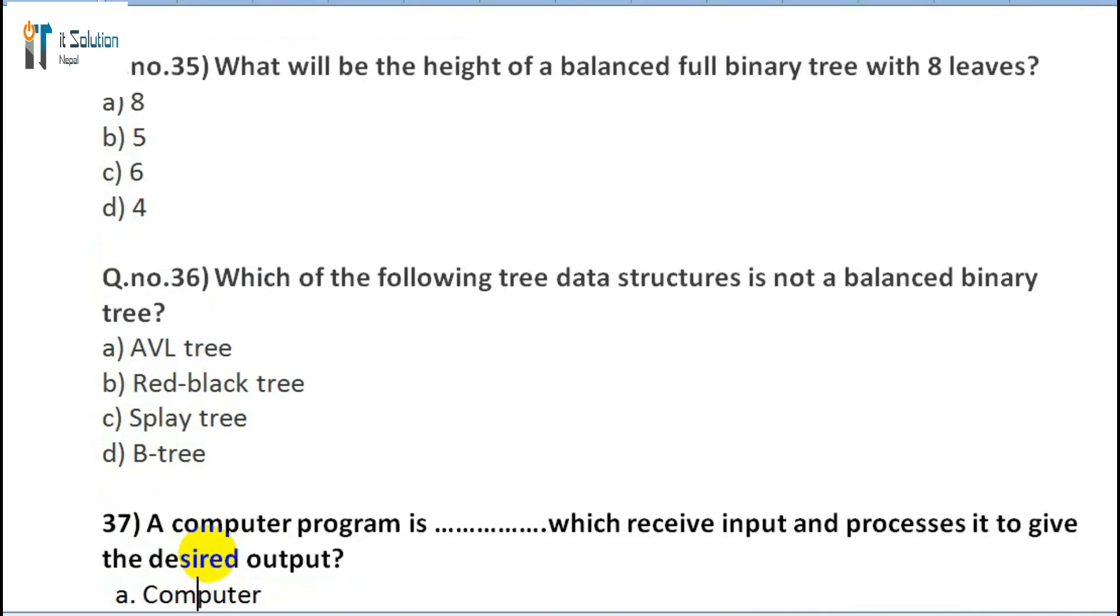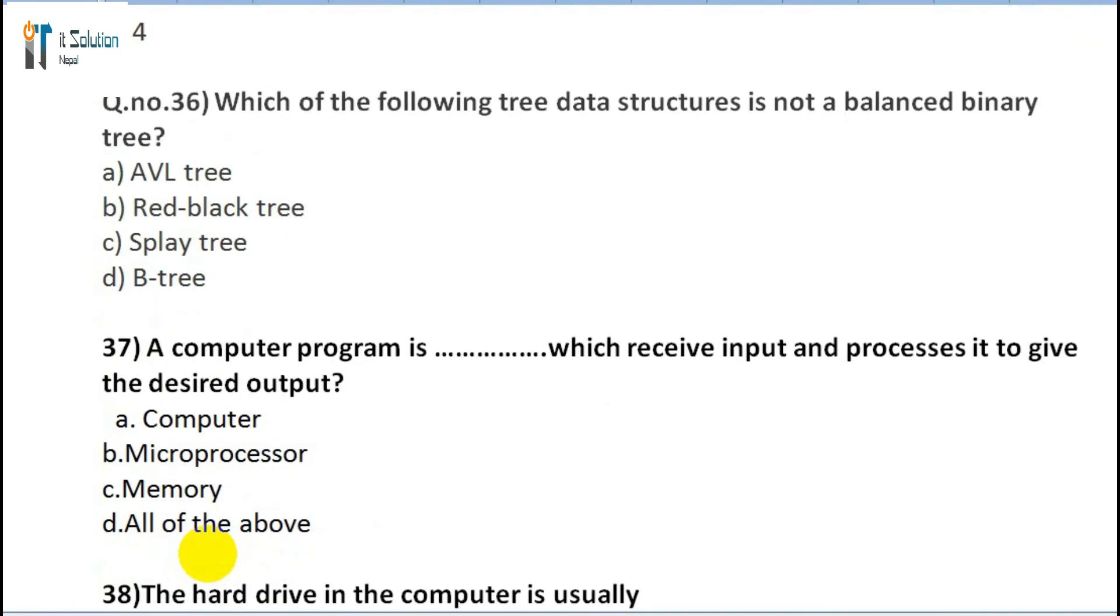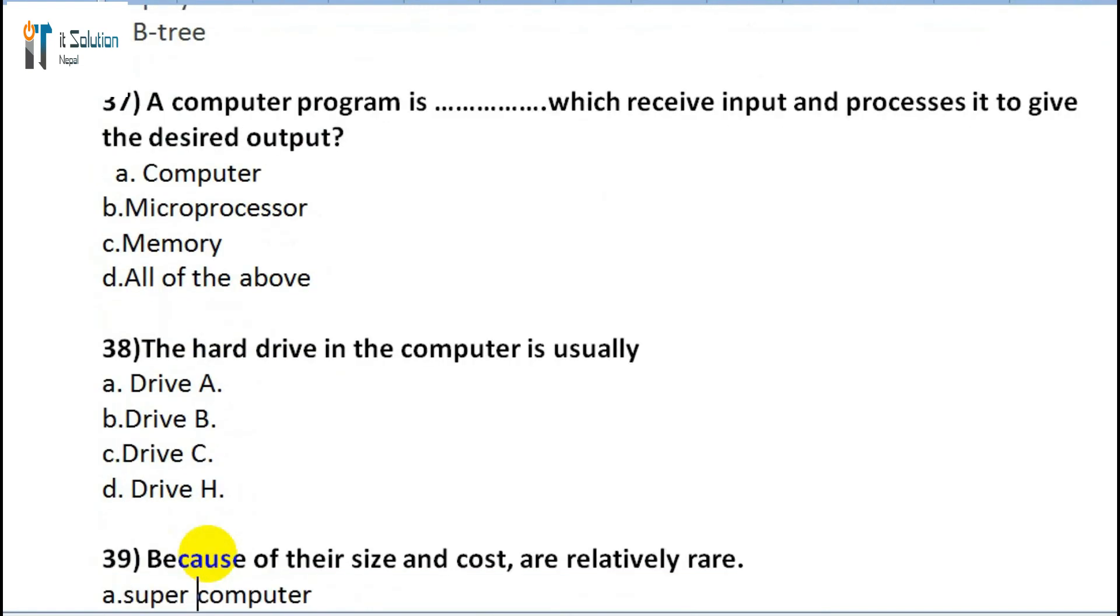Question 37: A computer program is something which receives input and processes it to give the desired output. A) Computer, B) Microprocessor, C) Memory, D) All of the above. Question 38: The hard drive in the computer is usually: A) Drive A, B) Drive B, C) Drive C, D) Drive D.